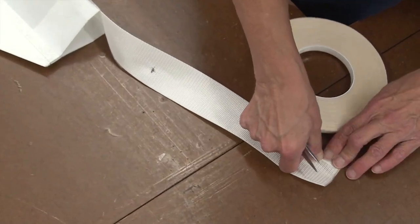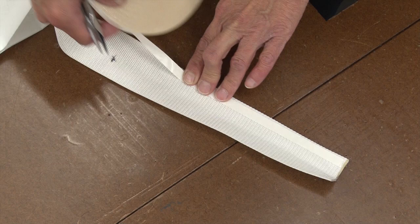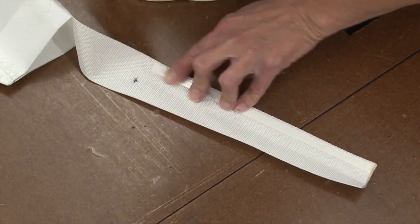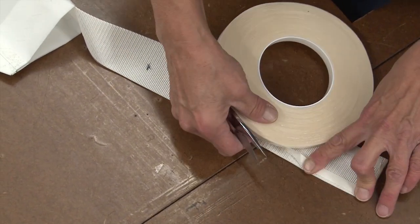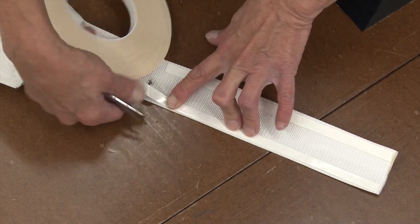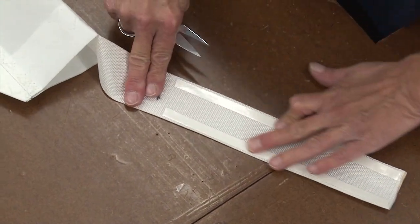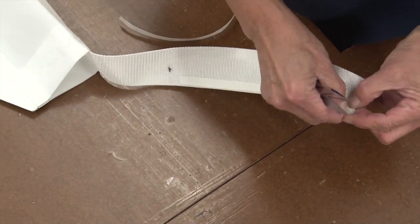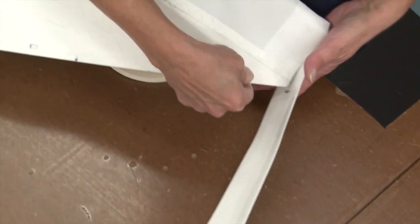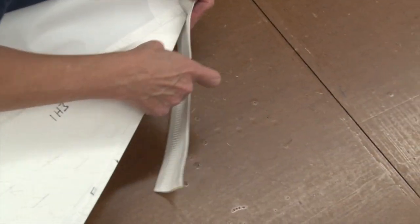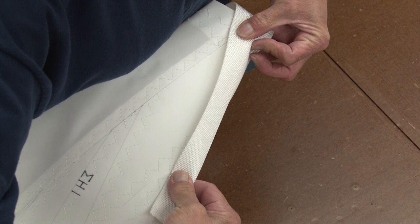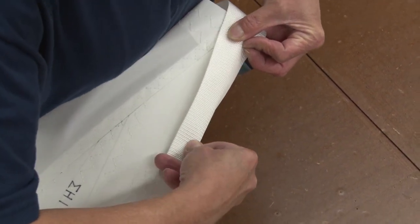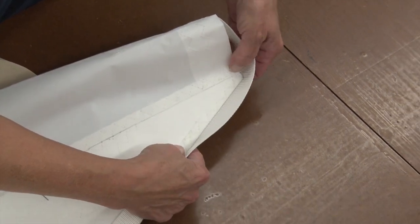Again we'll use the double sided tape to base this webbing in place so that we can take it over to the sewing machine and nothing will move on us while we're sewing it. Once that's done then carefully base the webbing to the leech edge folding it down the center and butting it up against the side of the sail as closely as possible.